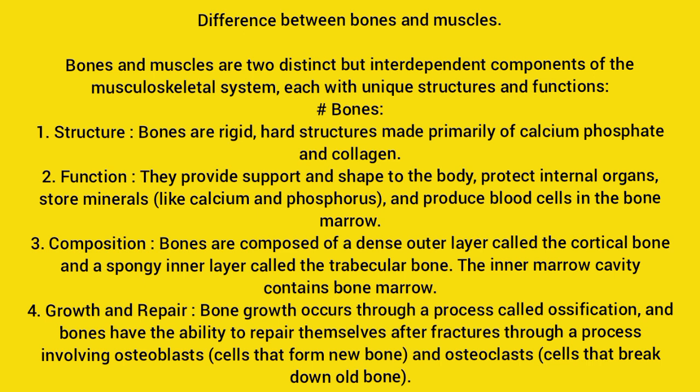Bones structure: bones are rigid, hard structures made primarily of calcium phosphate and collagen. Their function is to provide support and shape to the body, protect internal organs, store minerals like calcium and phosphorus, and produce blood cells in the bone marrow.